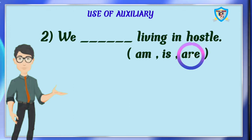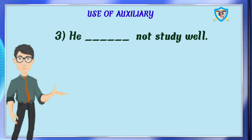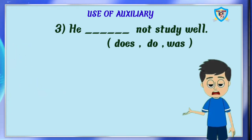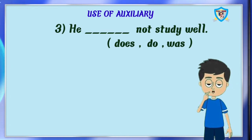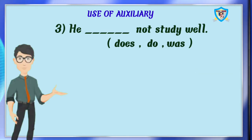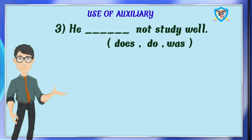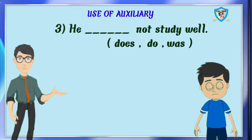Third question: he dash not study well. Options are does, do, was. Who can say the right answer? It is do. No, it is wrong. He is a third person singular number and it is in simple present, so we have to use: he does not study well. So we have to use does.